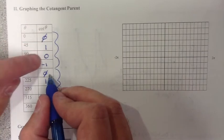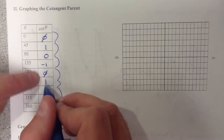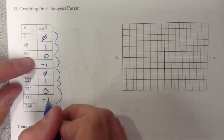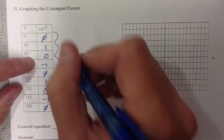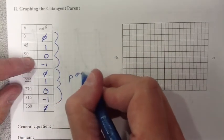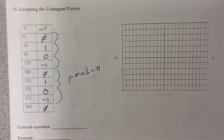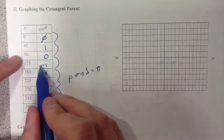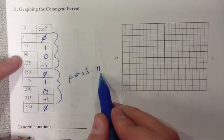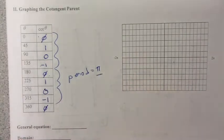If you notice, it's still repeating itself every π. It goes undefined, 1, 0, negative 1, undefined, 1, 0, negative 1, undefined. So again, its period is still π. It's going to repeat every 180 degrees or π radians.